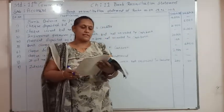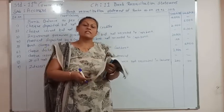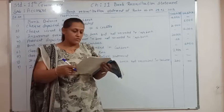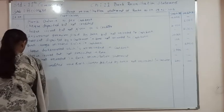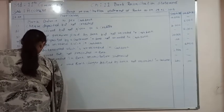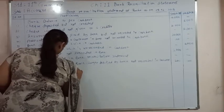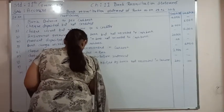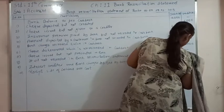Transaction number 10: the received side of the cash book is overcasted by ₹4,000. Received side means the debit side, which is overcasted, so we are supposed to credit it in the BRS. Entry 10: received side of cash book overcasted — ₹4,000, written on the credit side of the BRS.